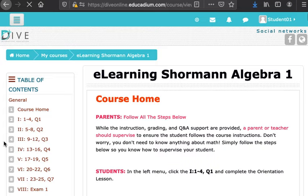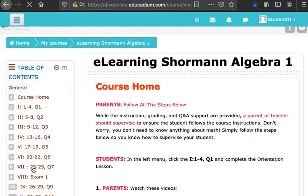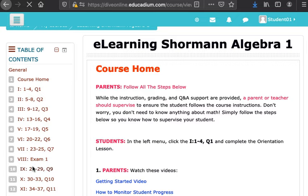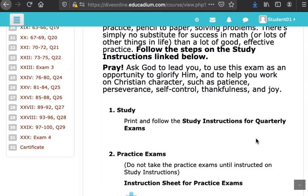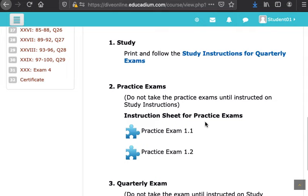You just go through that whole first quarter of 25 lessons. Calculus only has 20 lessons per quarter. The other courses have 25. When you're done with that first quarter, finish quiz 7, you're ready to start studying for your first quarterly exam. Just like everything else, you have instructions for it that are provided for you. There's study instructions there for the quarterly exam. Just print those one time for the whole course and keep those organized.